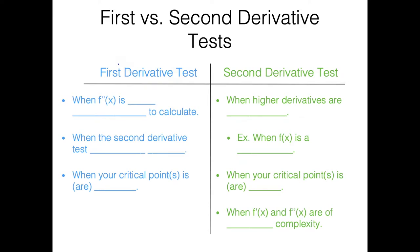Let's talk about when it's easier to use the first derivative test as opposed to the second. The first situation is when f double prime of x is very difficult to calculate. This occurs sometimes when you have rational functions, or if you have to do a lot of product rules, chain rules, or implicit differentiation — it can sometimes be very tedious to find that second derivative. So if finding that second derivative is very tedious, you might as well stop at the first derivative and just do your work there instead.